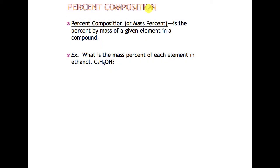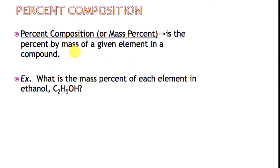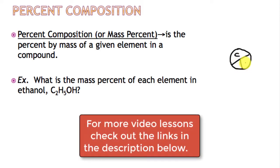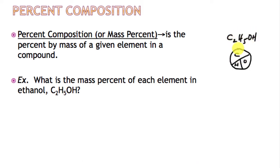Today's video lesson is on percent composition. Percent composition, also known as mass percent, is a way of looking at how a compound's mass is divided up by the elements that make it up. So if we look at this compound, we want to know how much of it is made up of carbon, how much is made up of oxygen, and how much is made up of hydrogen — what percentage of C2H5OH each element is making up.